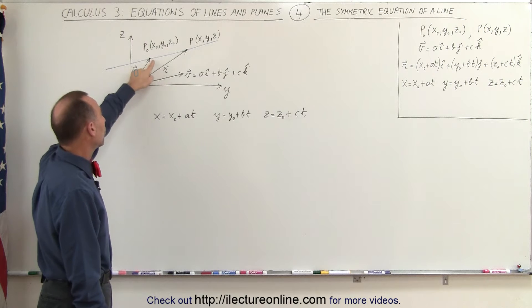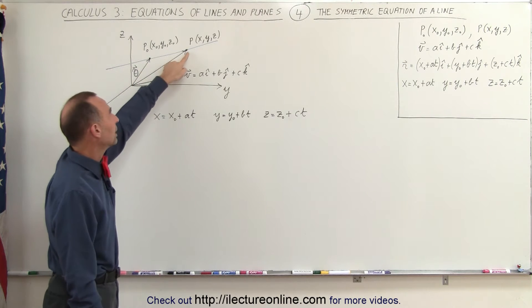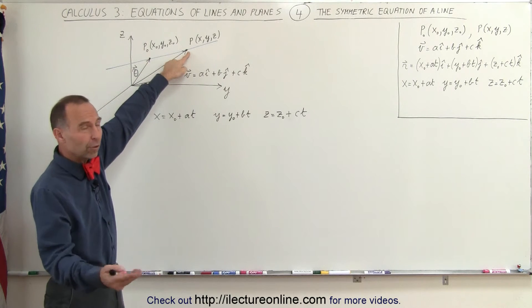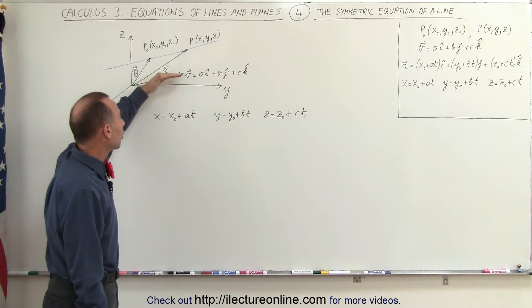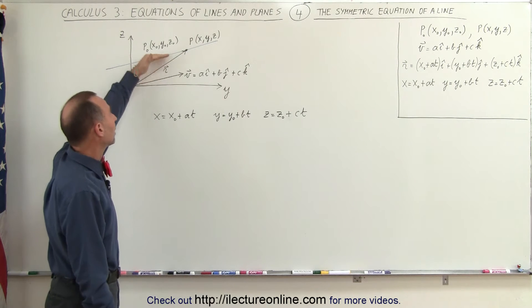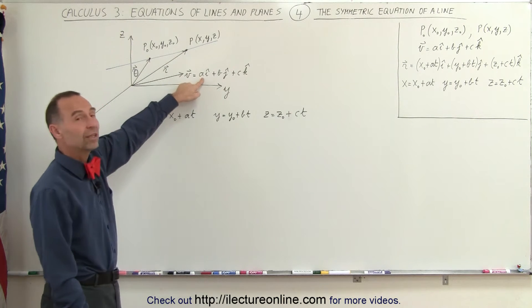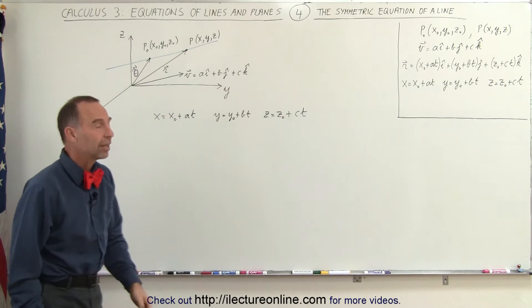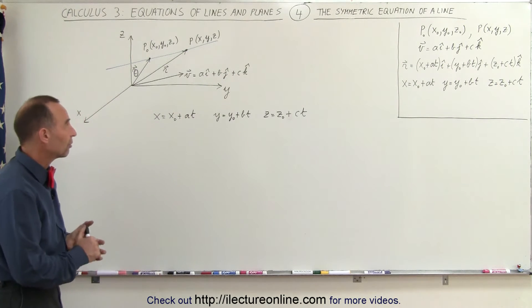We have a vector which points to the known point, we have a vector which points to the unknown point or the arbitrary point, and then we have a vector called the vector v which runs parallel to the line which has the coordinates a, b, and c for i, j, and k for the directions in the x, y, and z direction.